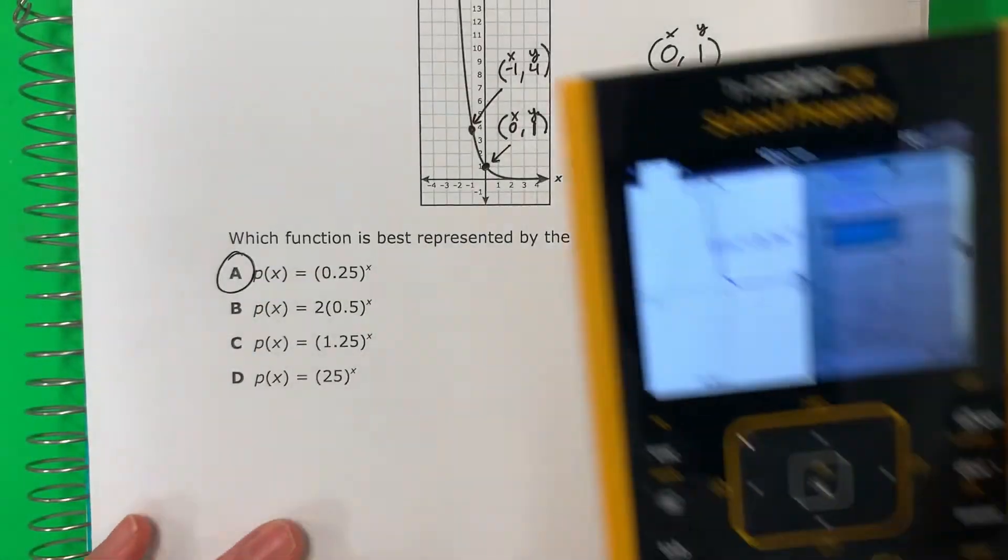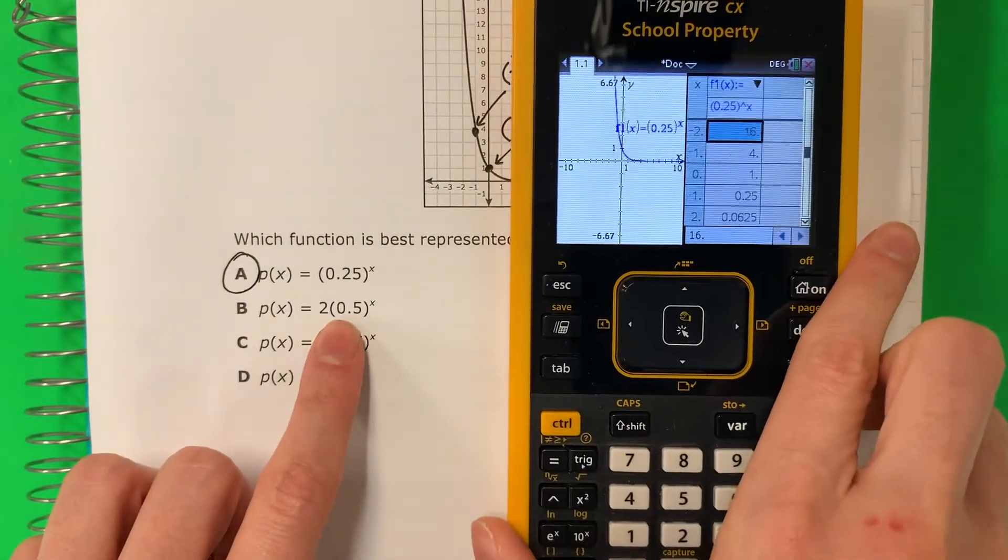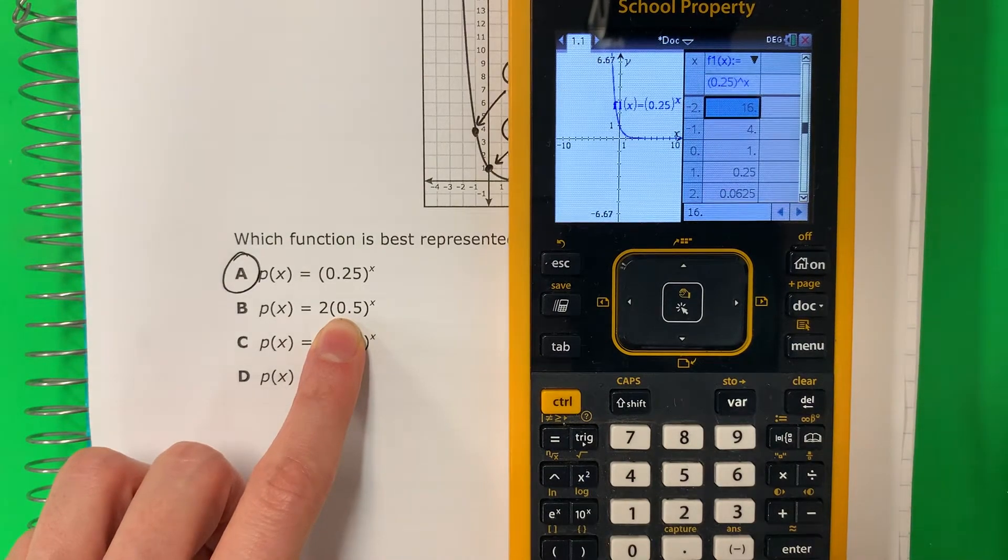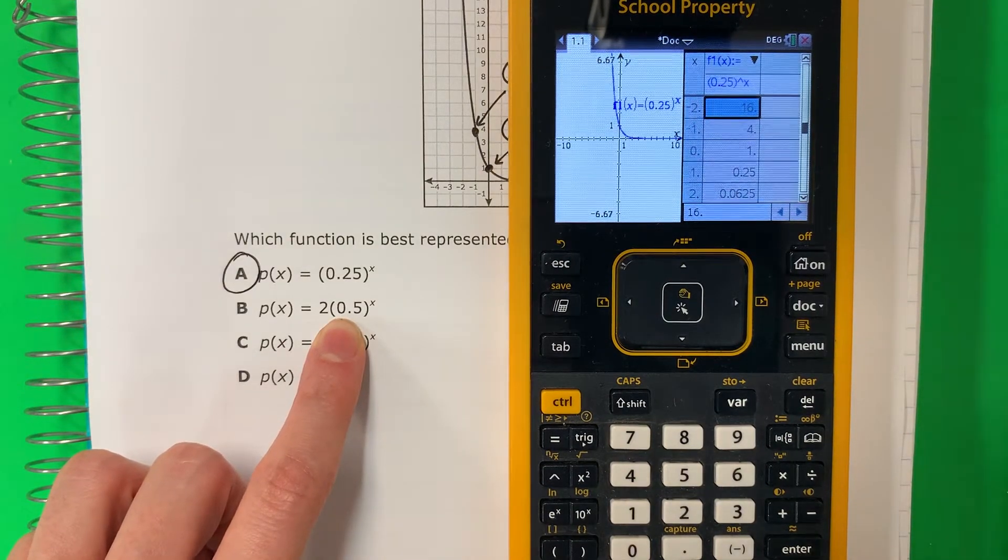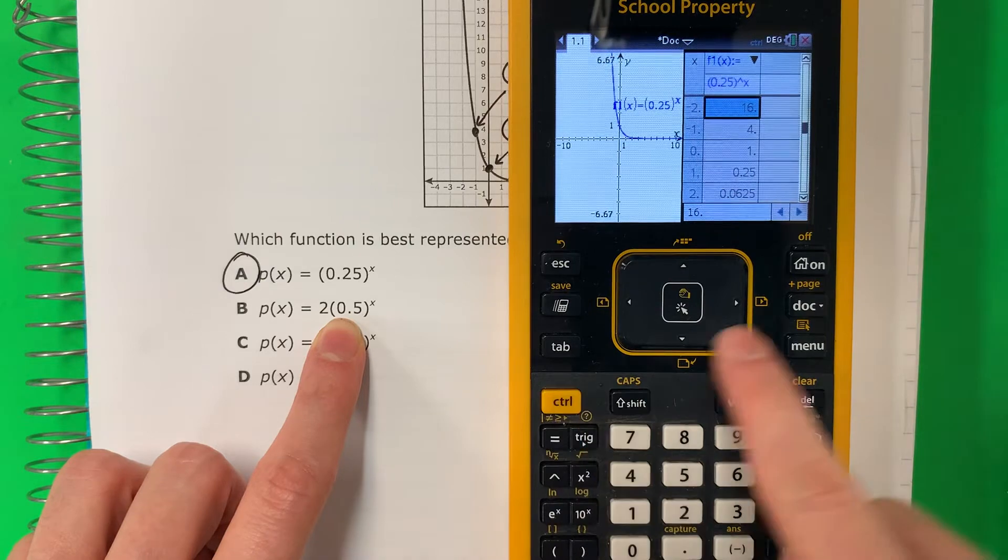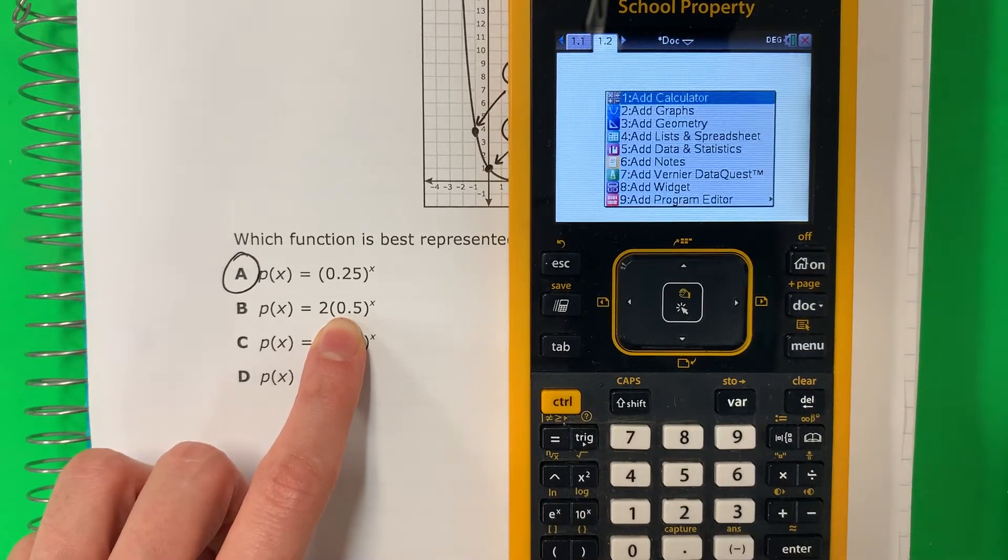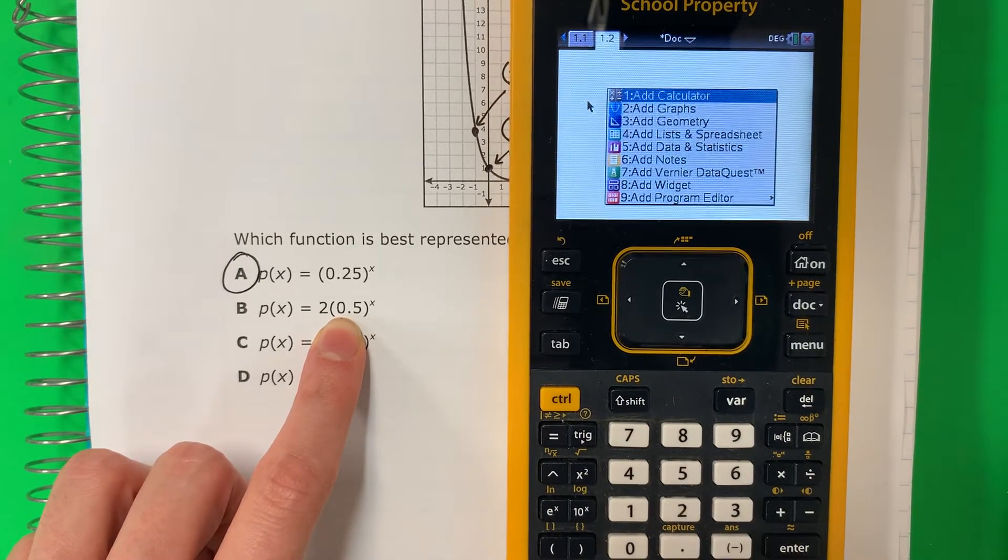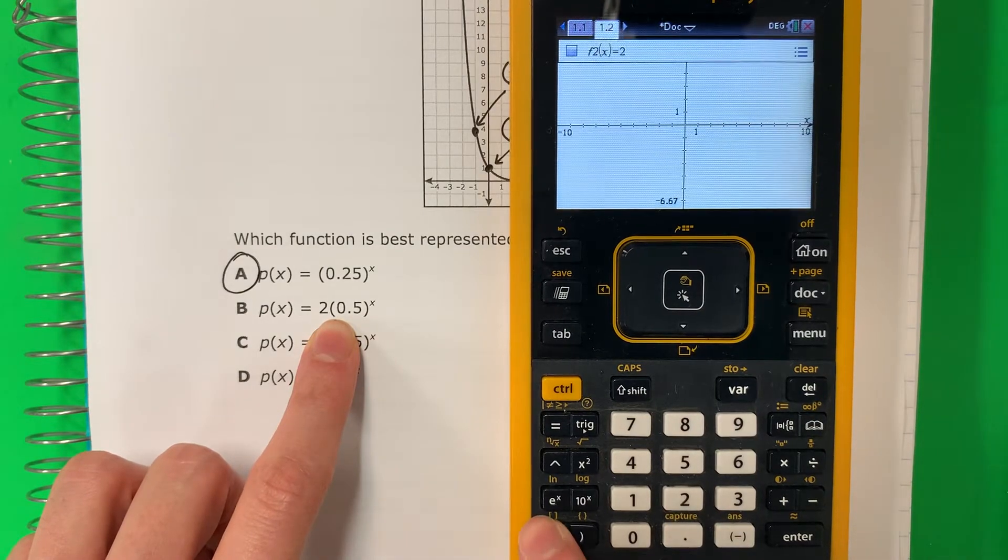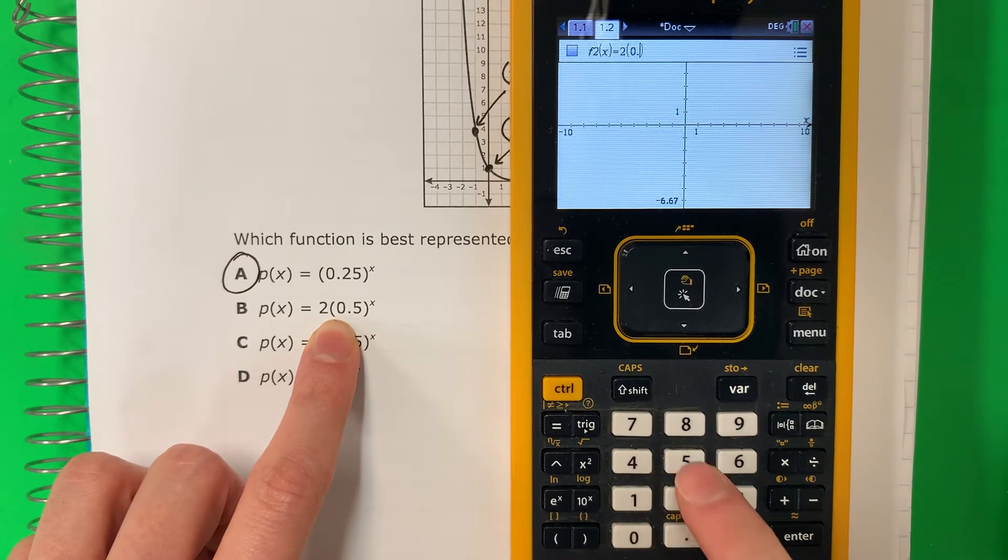Let's practice some more. Let's practice this one just for practice. Let's open a new tab. Control. Two again. Let's put this equation. Two. Open parenthesis. Zero point five. Parenthesis.